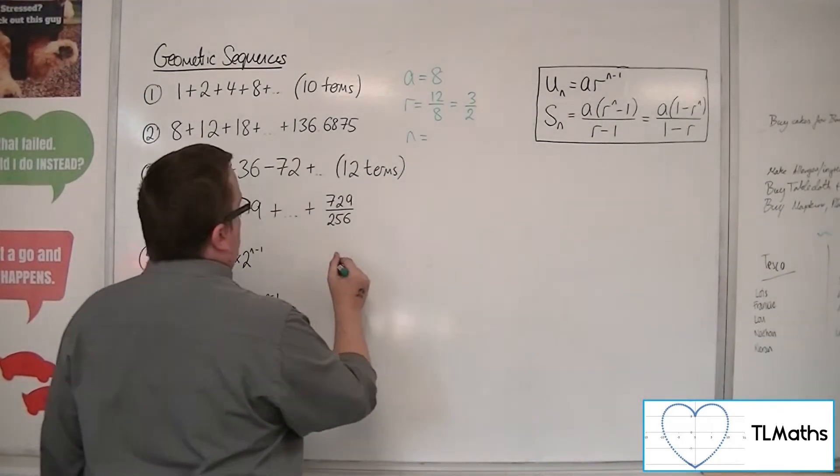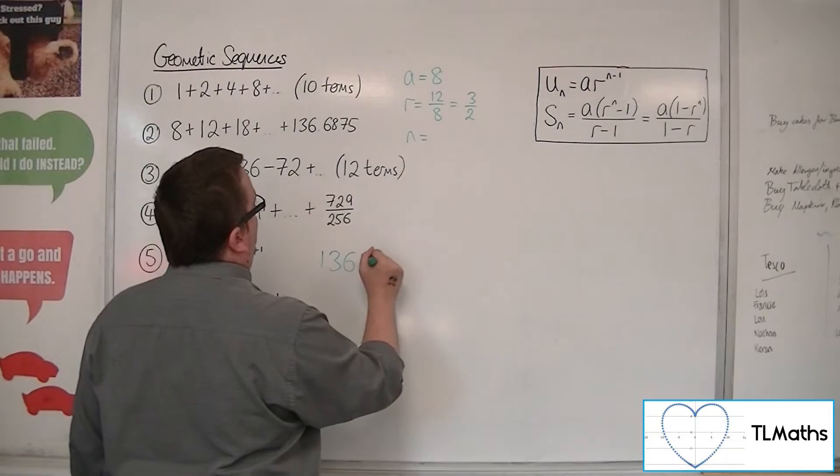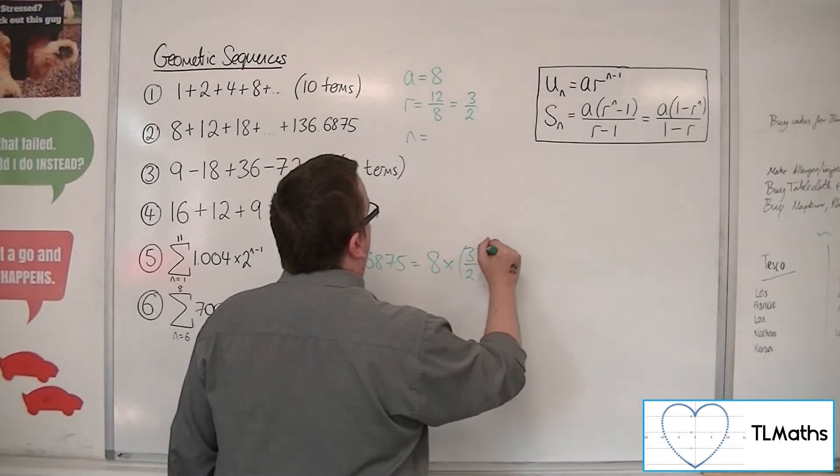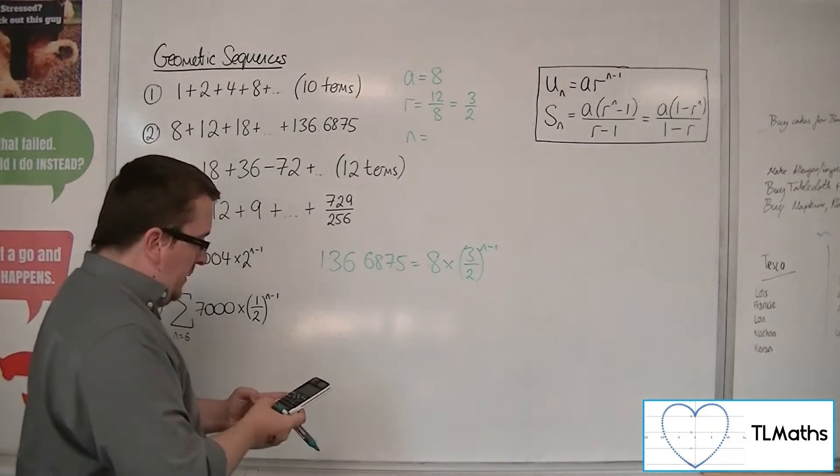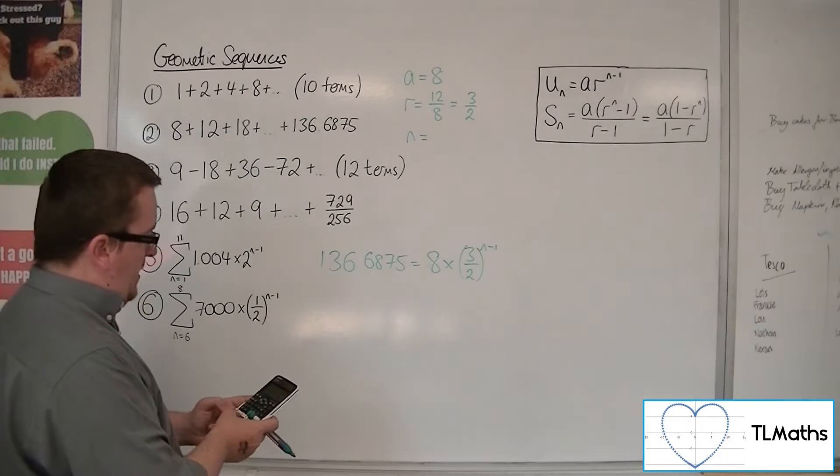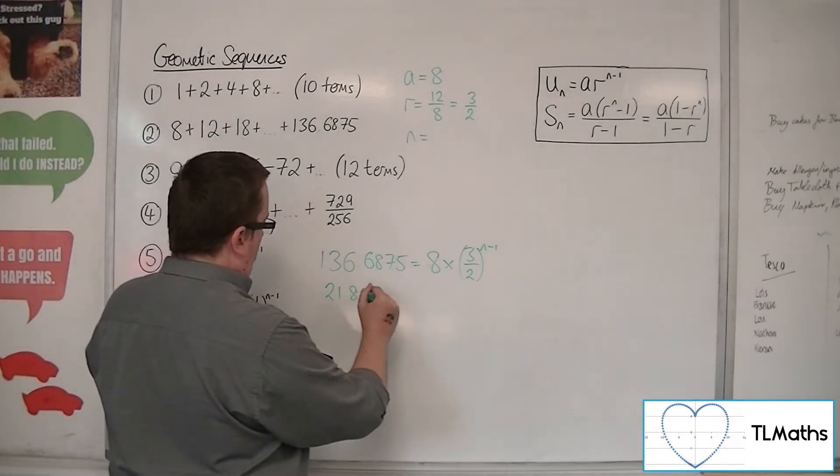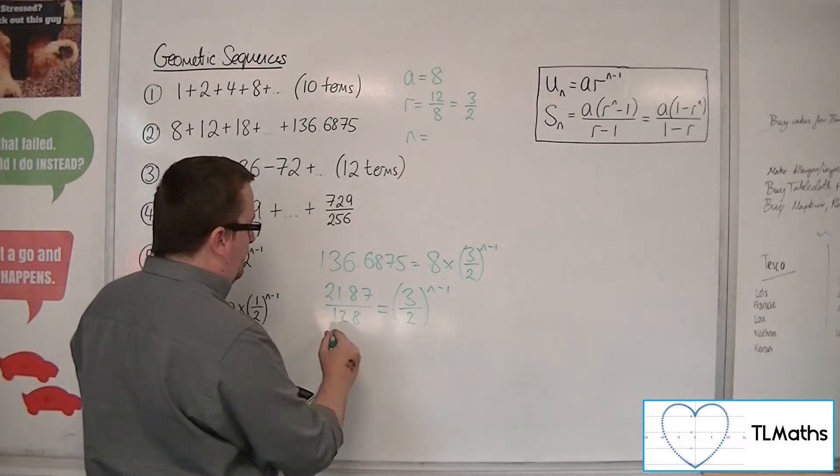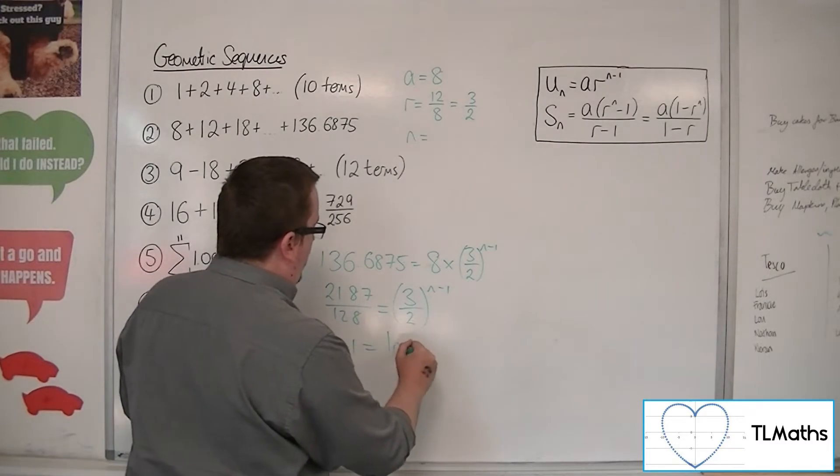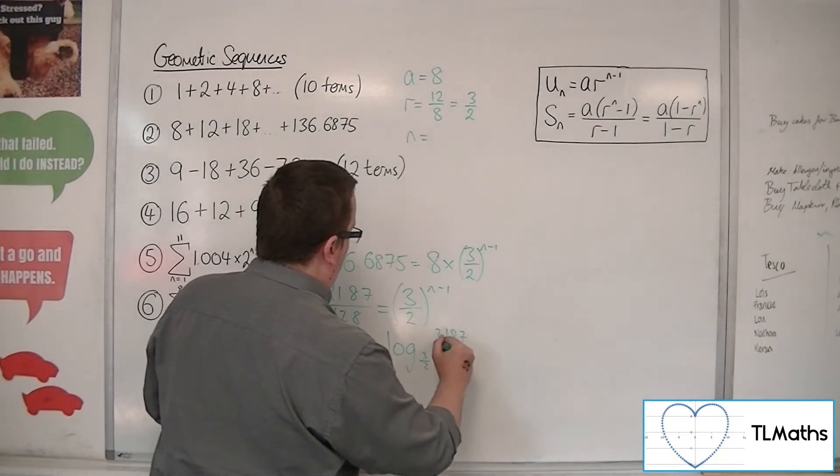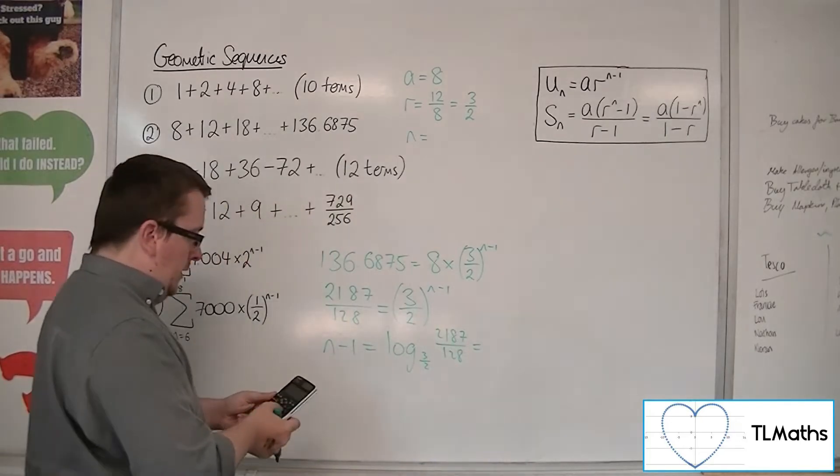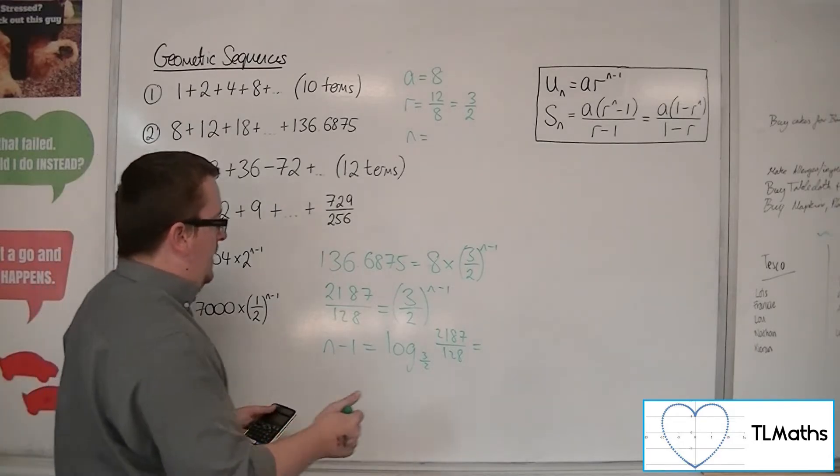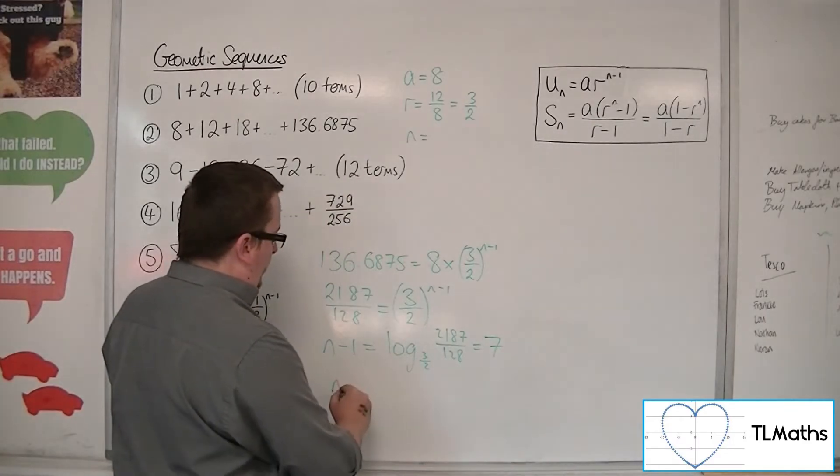So using that first formula, we can say that 136.6875 must be equal to the first term times by 3 halves, the common ratio, to the power of n minus 1. Now, if we divide both sides by 8 first, we get 2187 over 128 is equal to 3 halves to the power of n minus 1. Now, logging both sides, so that n minus 1 is log base 3 halves of 2187 over 128. So log of 3 halves of 128 is 7, so adding one to both sides, n must be 8.